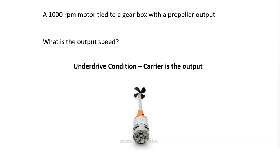The underdrive condition is a condition that you want to put your vehicle or your motor into when you're trying to lower the RPM but also raise the torque. So if you're doing off-roading or you just need a high torque condition, you would go into your underdrive condition. And according to our five laws of planetary gearing, underdrive is when your carrier is the output, regardless of whether your input is the sun or the ring gear.